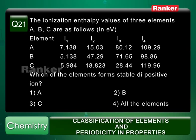You can realize that I2 and I3 differ largely. So this element is expected to have two valence electrons.